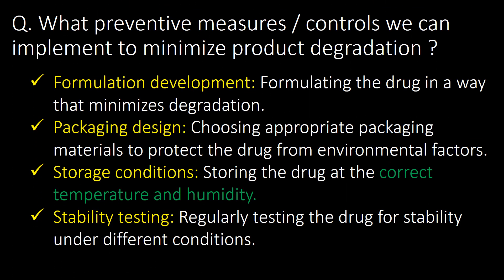What preventive measures or controls can we implement to minimize product degradation? Four important preventive measures are: first, formulation development — formulating the drug in a way that minimizes degradation; second, packaging design — choosing appropriate materials to protect the drug from environmental factors; third, storage conditions — storing the drug at the correct temperature and humidity; and fourth, stability testing — regularly testing the drug for stability under different conditions.